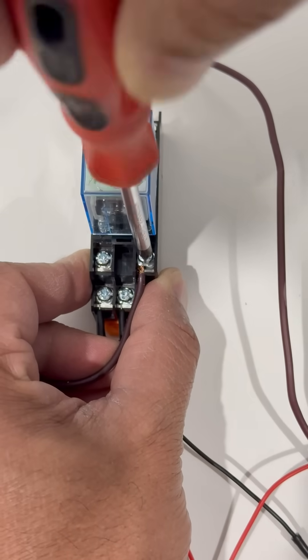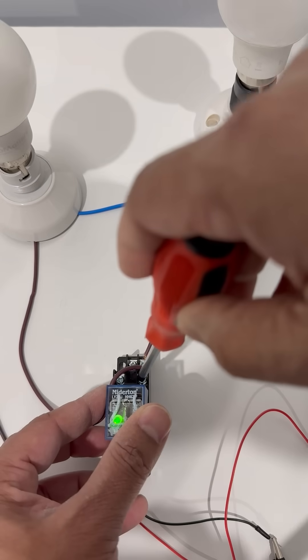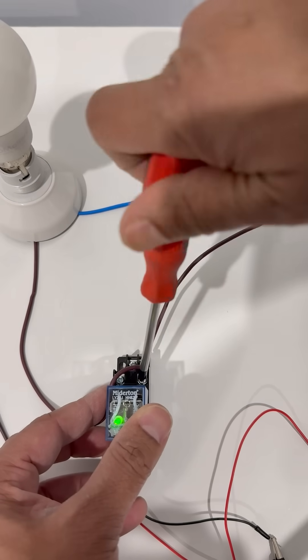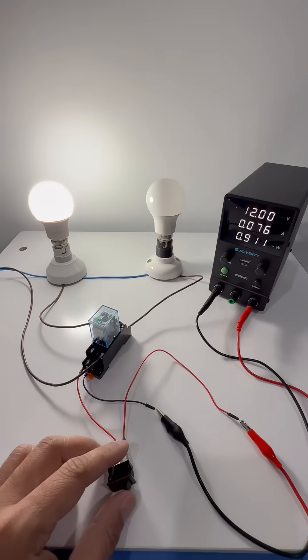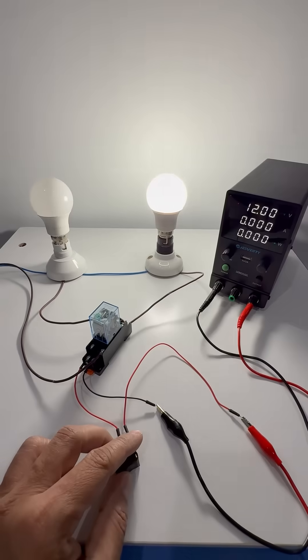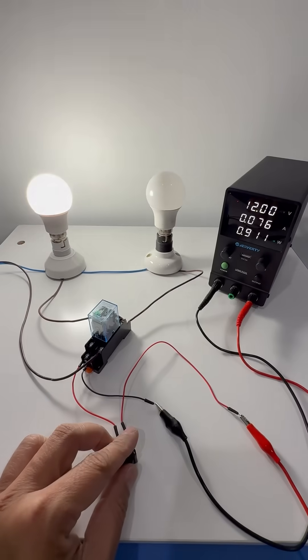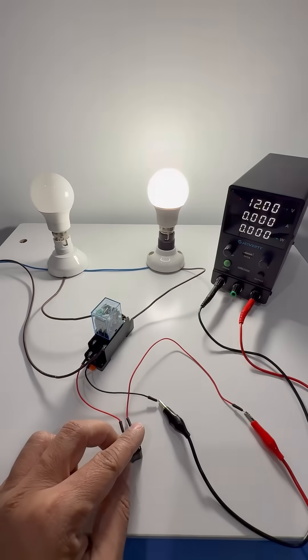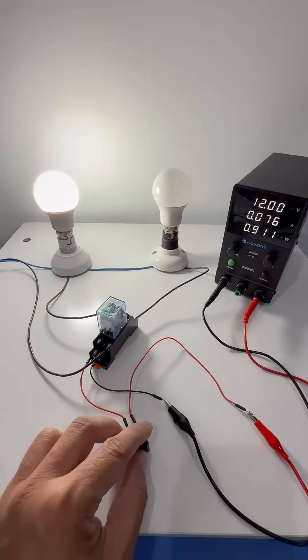Now the relay switches internally. The first bulb turns off, and the second bulb comes on. This toggling shows how easily we can alternate between two high-voltage loads using just a simple control signal. It's an efficient and safe way to automate lighting and other appliances in any smart system.